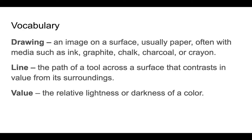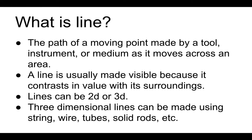A line is the path of a tool across the surface that contrasts in value from its surroundings, and value is the relative lightness or darkness of a color. A line is usually made visible because it contrasts in value with its surroundings, meaning a line can be either lighter or darker than the space around it.